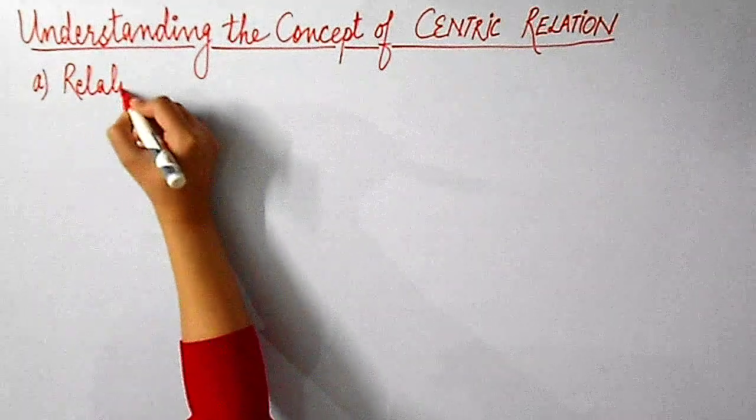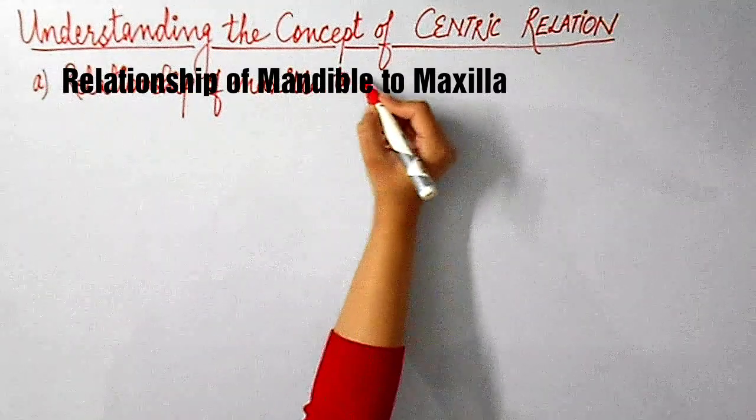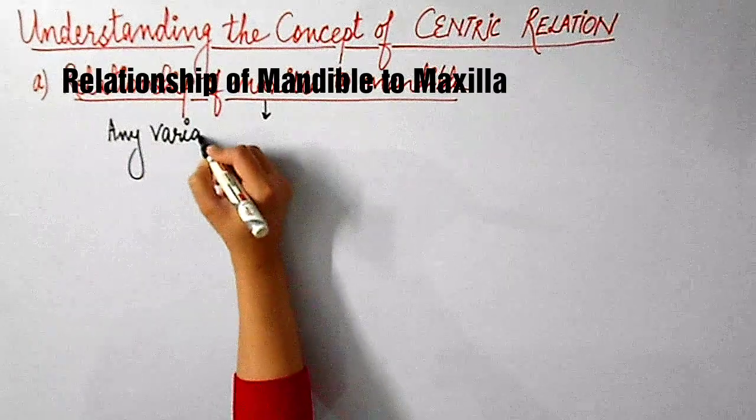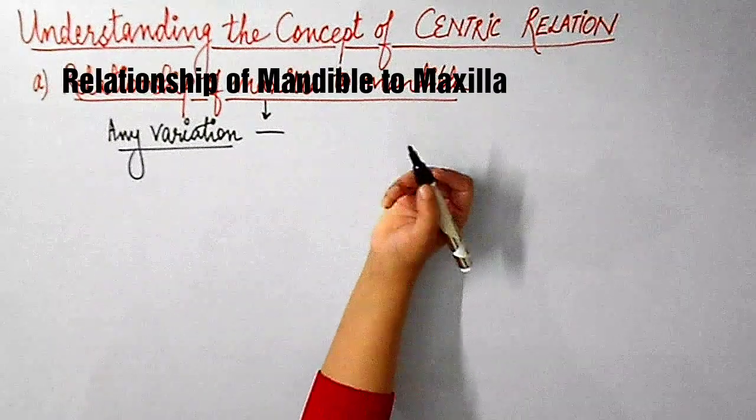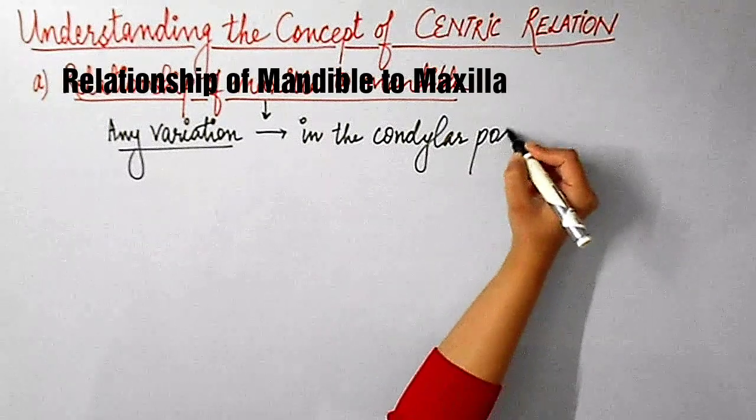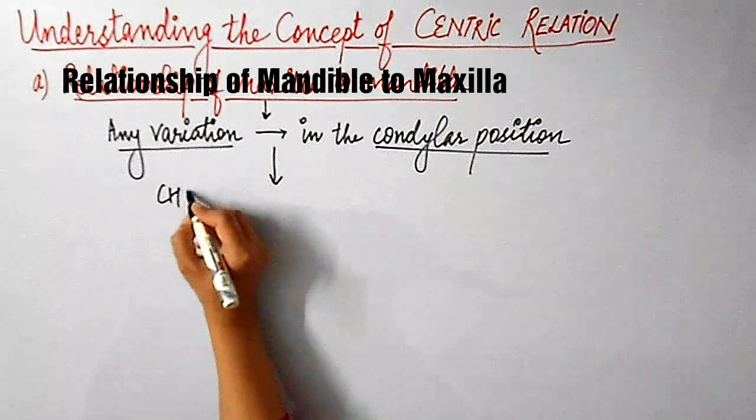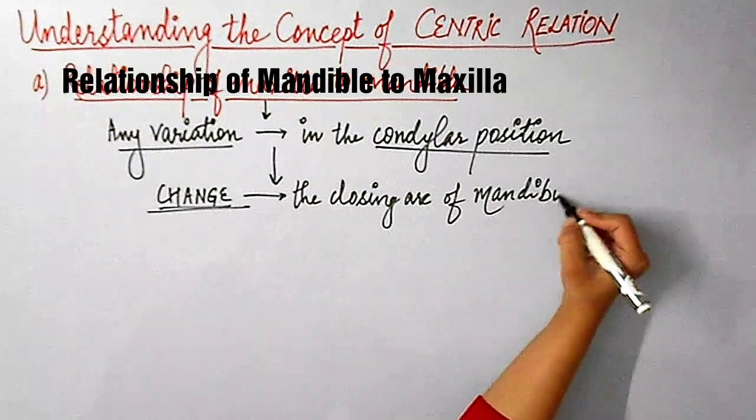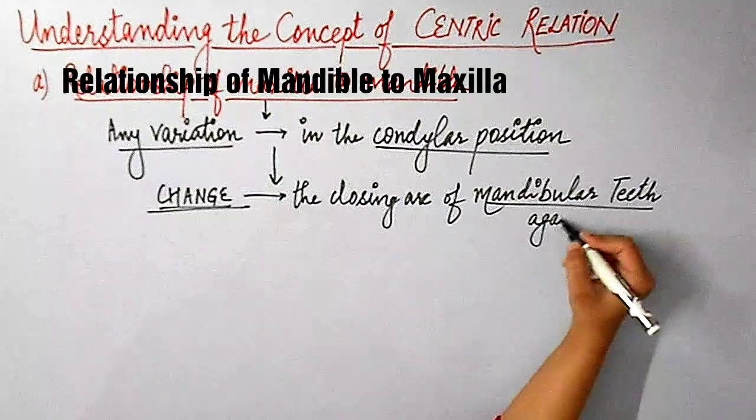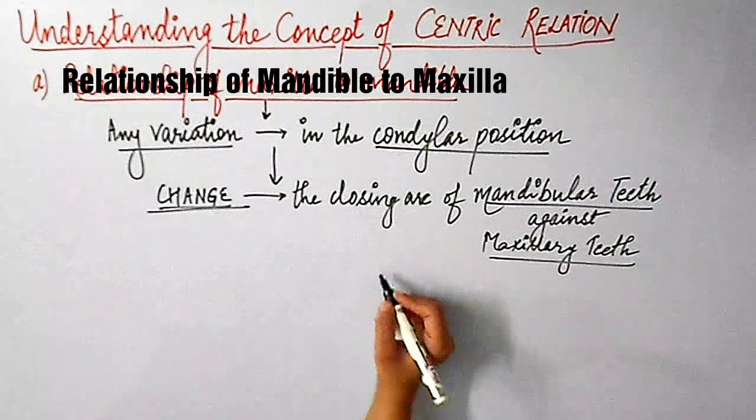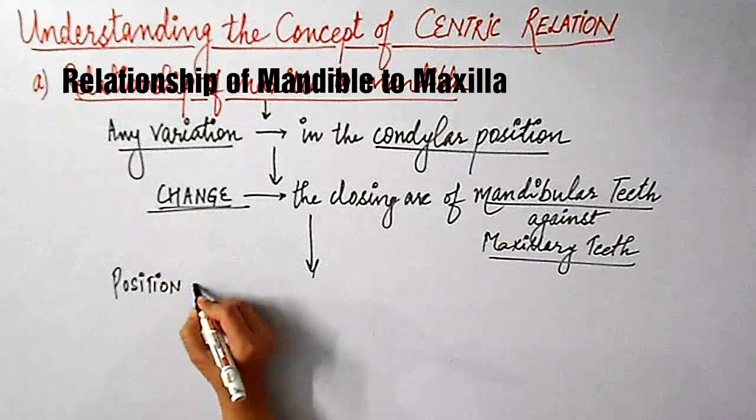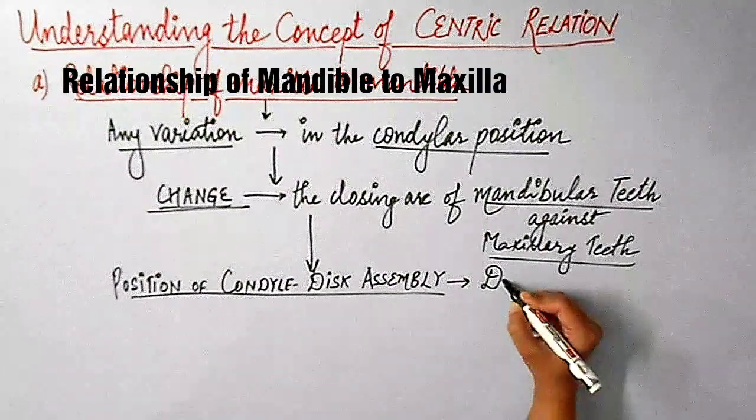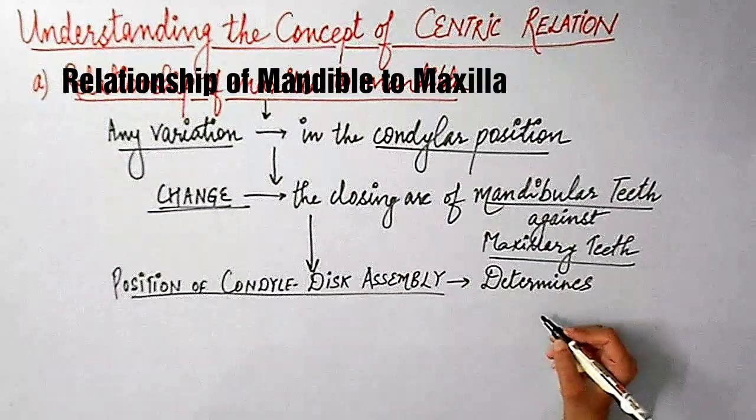We'll start with the first part of the definition of centric relation, which is the relationship of mandible to maxilla. What does this mean? This means that whenever there is any variation in the condylar position, this is going to result in a change in the closing arc of the mandibular teeth against the maxillary teeth. Whenever there is a change in the condylar position, this will change the closing arc of the mandible against the maxillary teeth.